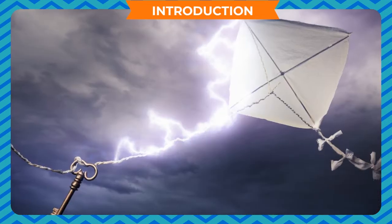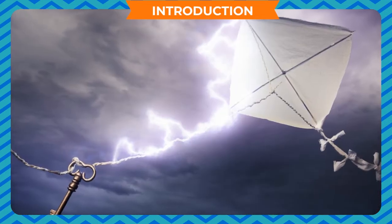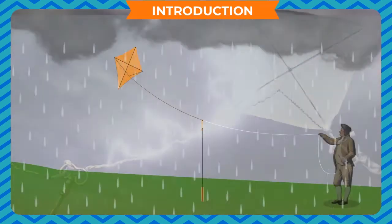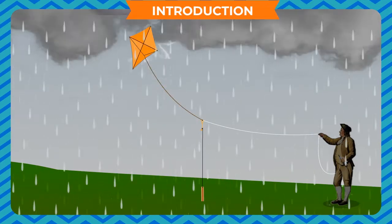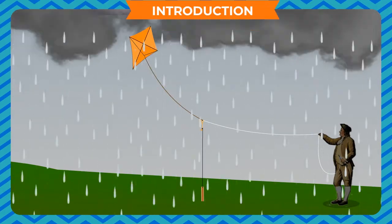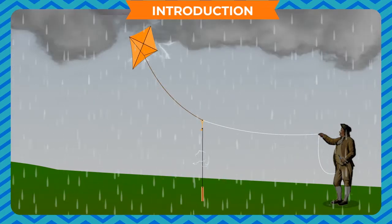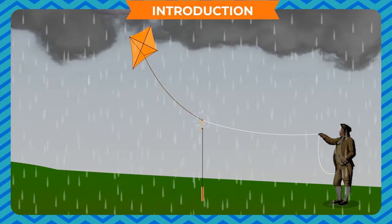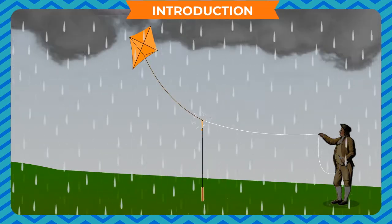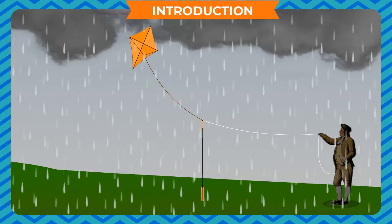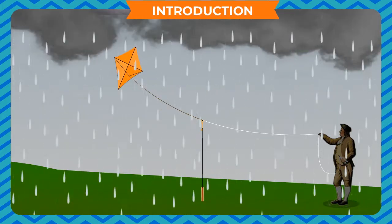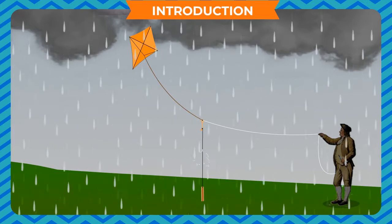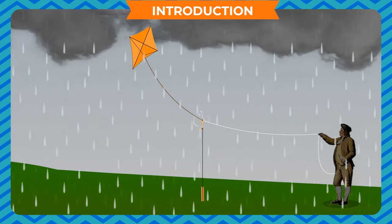For this purpose, he flew a kite in thunderstorms and tied a key near the other end of the string. He found that electricity from the clouds flowed through the wet string to produce sparks on the key when it was touched by a metal rod. He explained that lightning and sparks from the clouds are essentially the same phenomenon. However, it took 2000 years for this realization to occur.